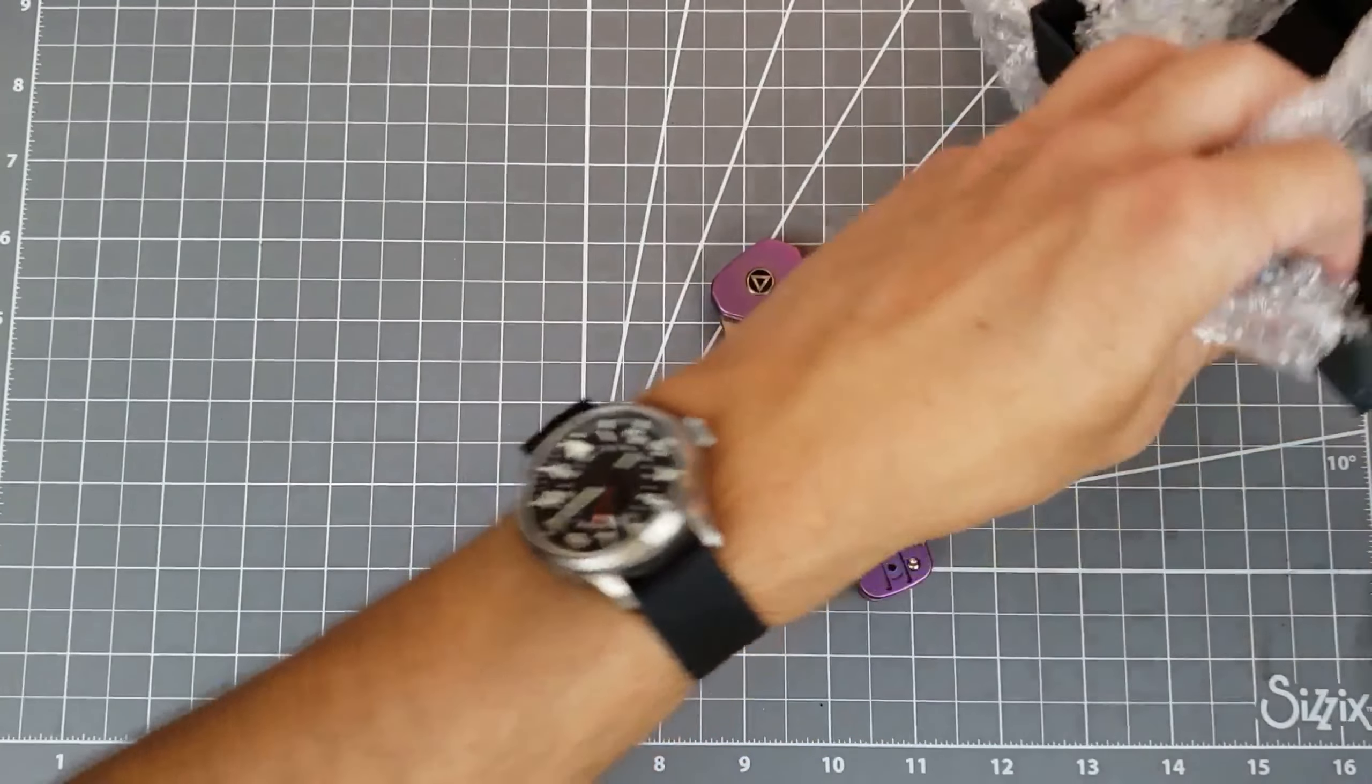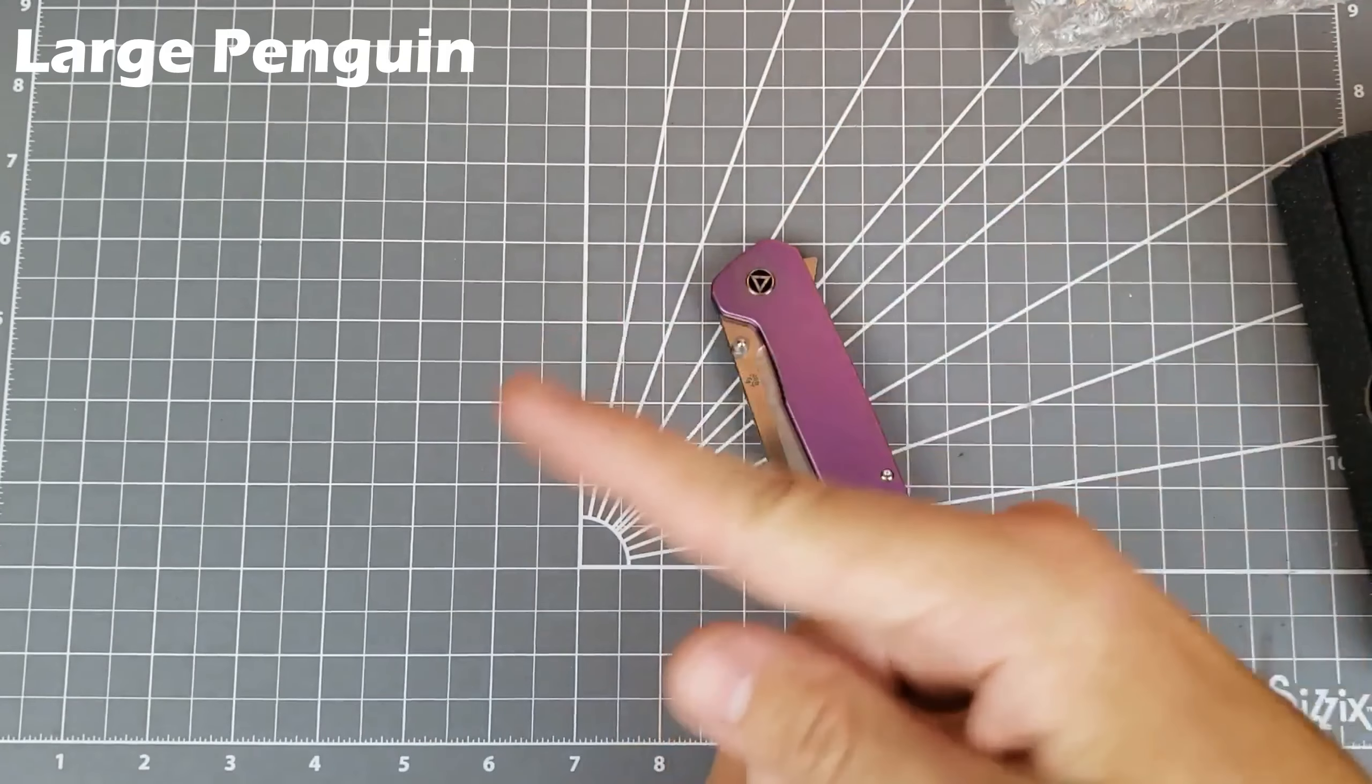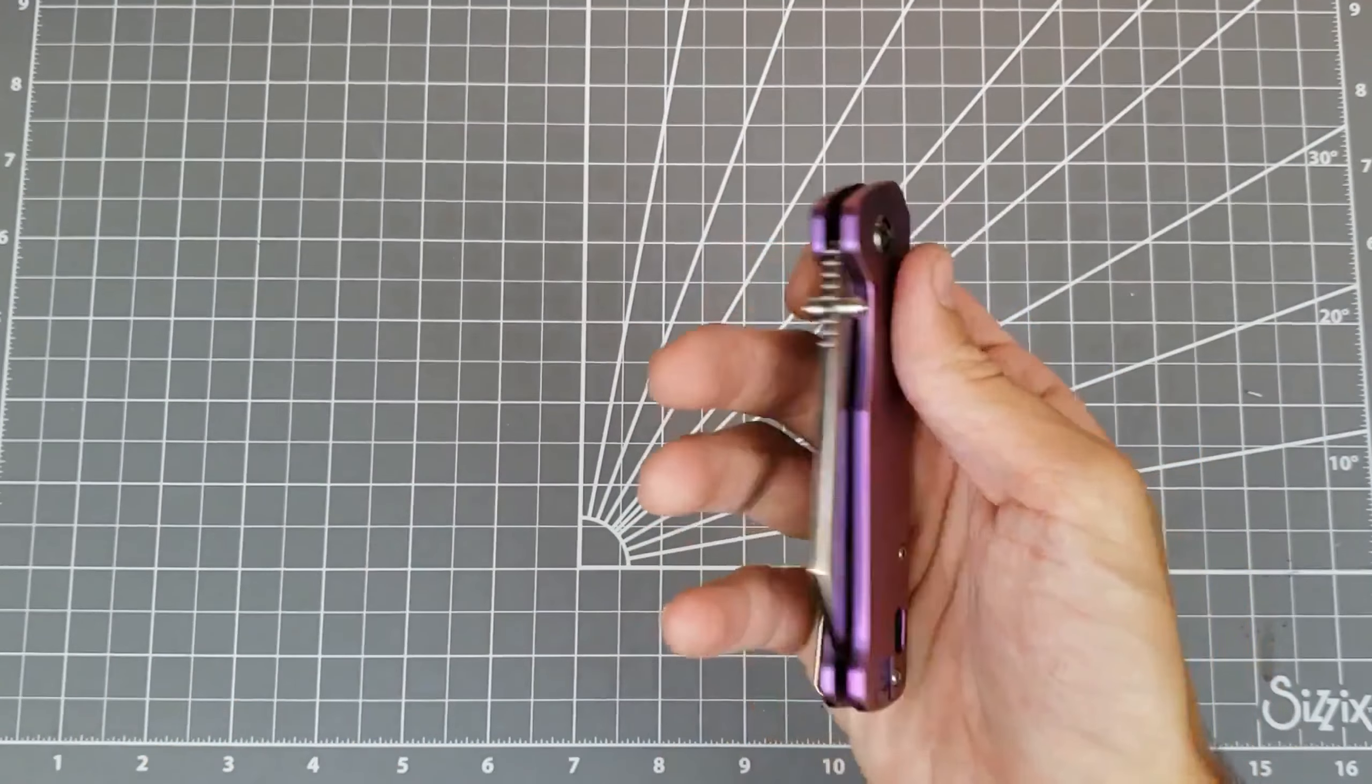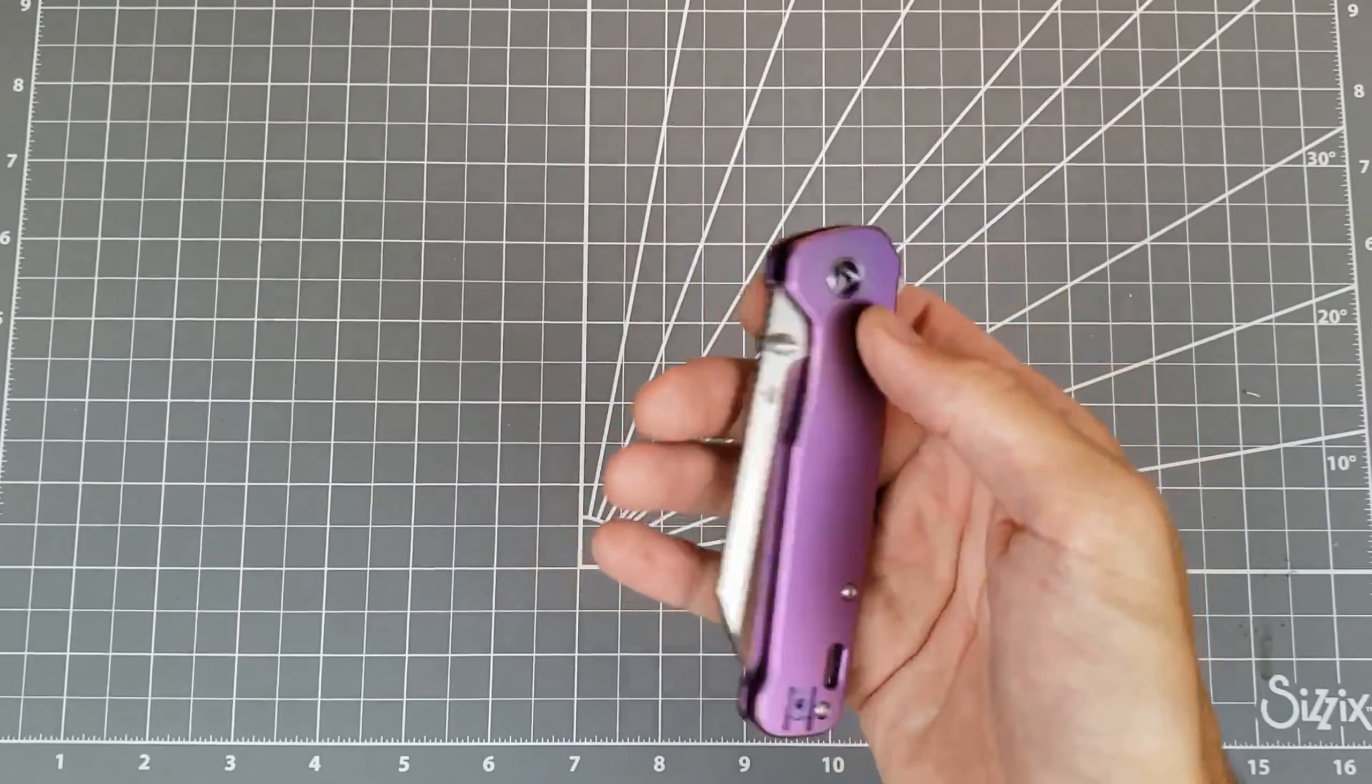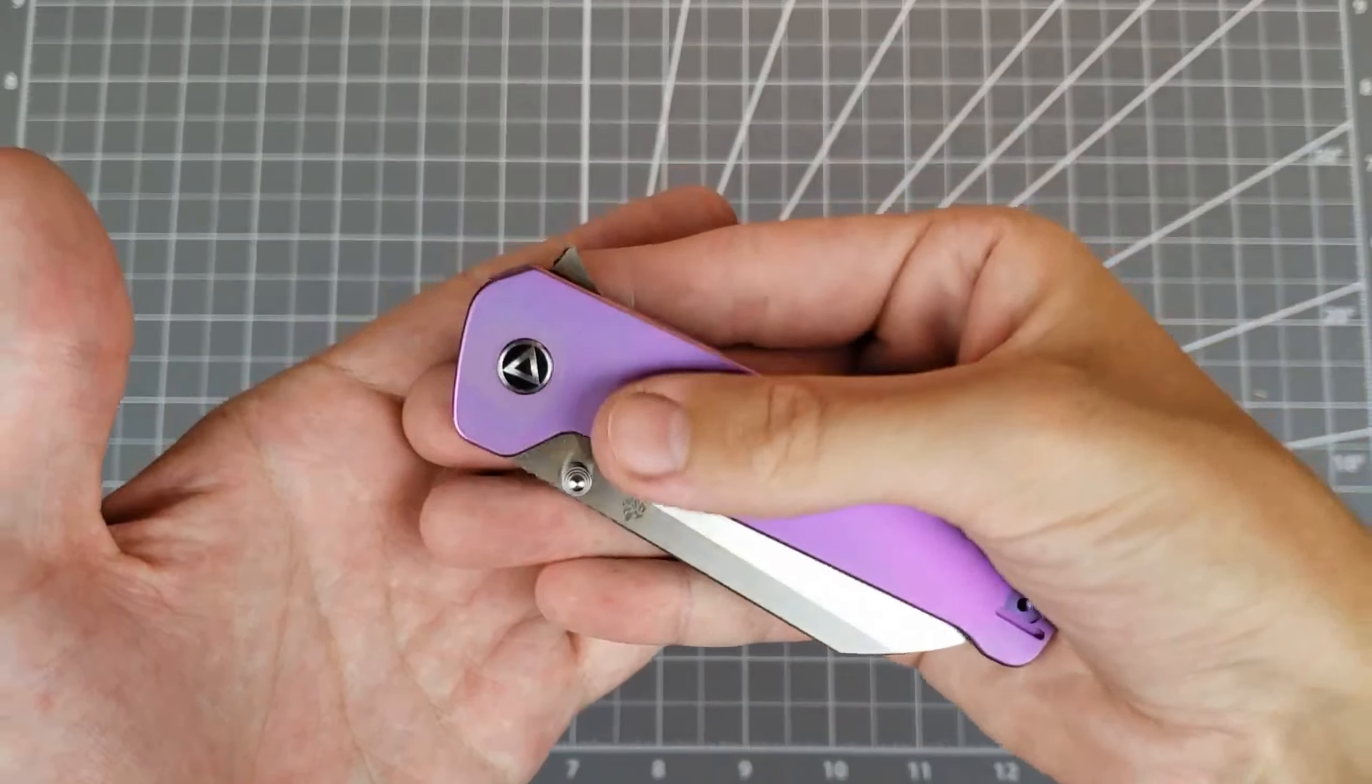I don't actually know what they're calling this. I'll put it on the screen with the actual name of this, but it is the QSP Penguin XL, pretty much the large Penguin. And this one has some interesting features over the normal Penguin.